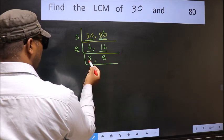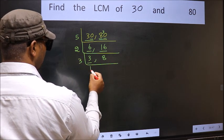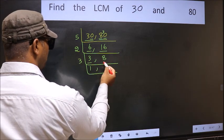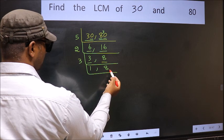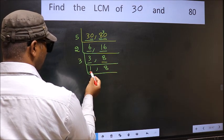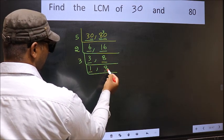Now we have 3. 3 is a prime number, so 3 times 1 is 3. The other number 8 is not divisible by 3, so we write it down as it is. We got 1 here. So focus on the other number, 8.